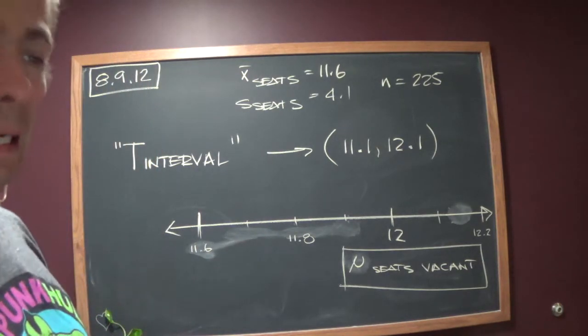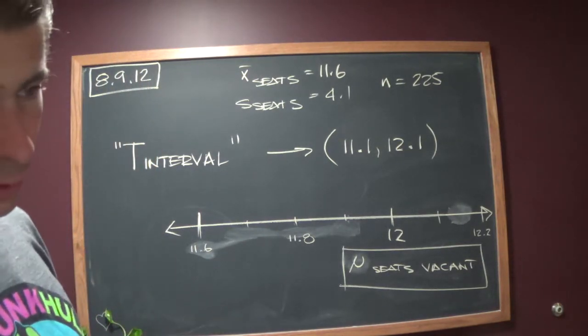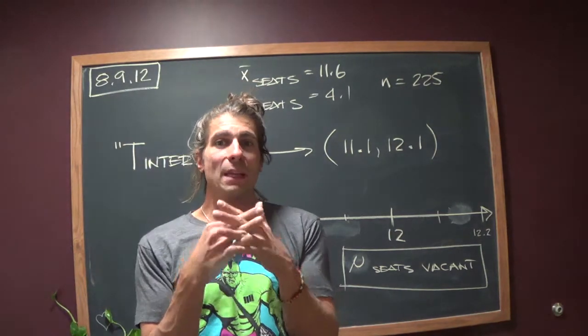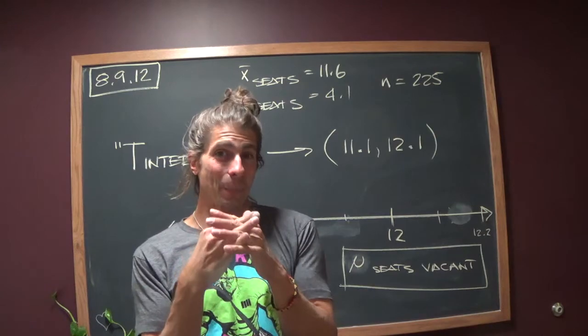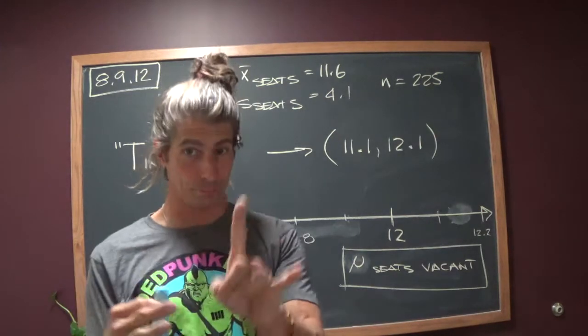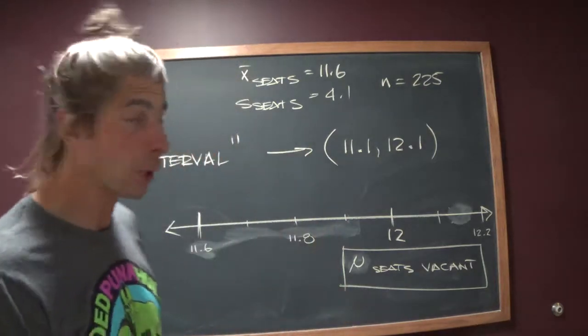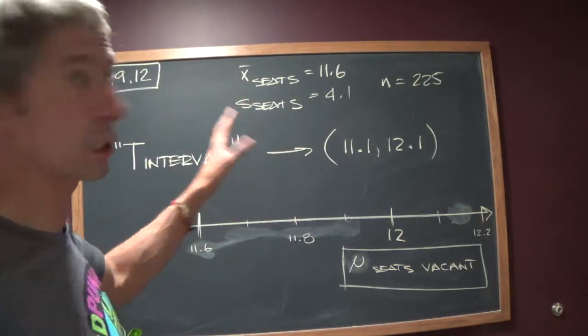Part B says define X and X bar in words. This is pretty important. X would be the number of unoccupied seats on any given flight. Makes sense so far?